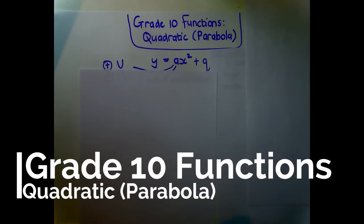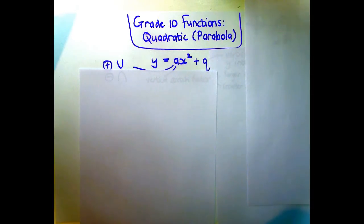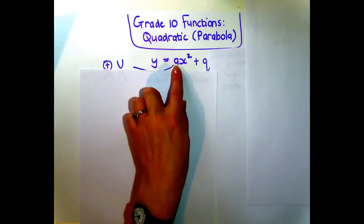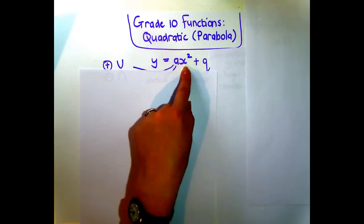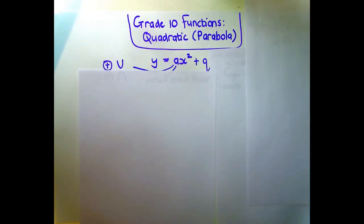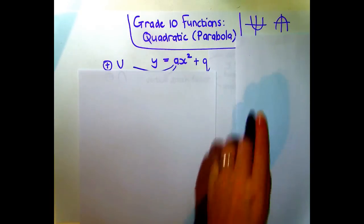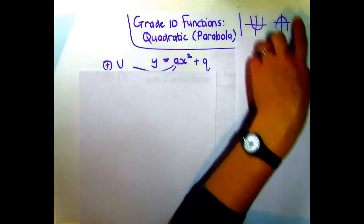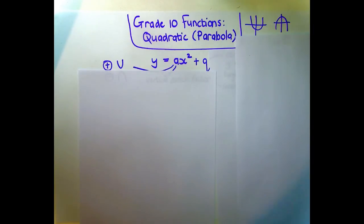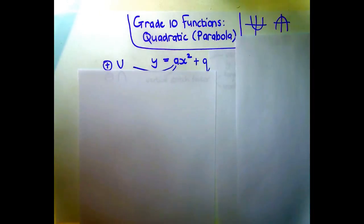A quadratic function or parabola graph has a square in it because the word quadratic means squared. The formula is y equals ax squared plus q, and that's how you know it's going to be a parabola. Parabolas are either ones that go towards the top or ones that go towards the bottom — we refer to those as a happy parabola or a sad parabola, because it looks like a happy mouth or a sad mouth.